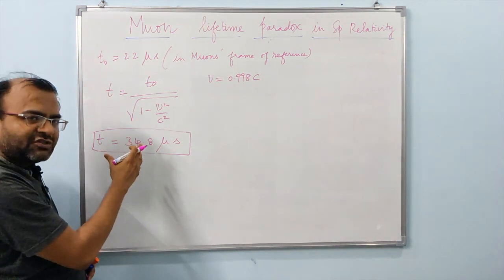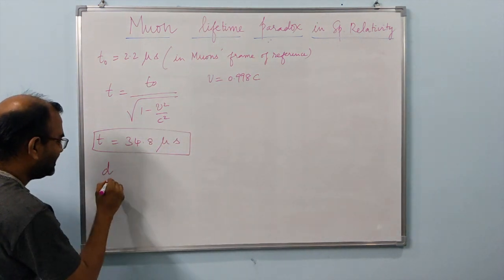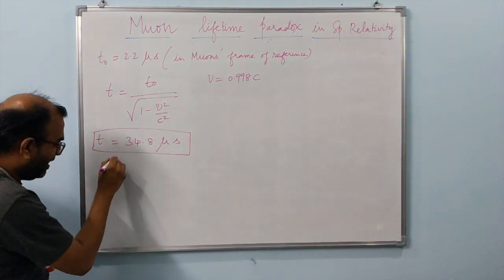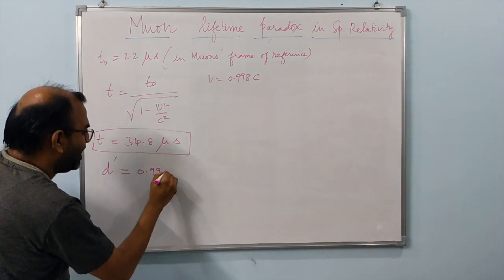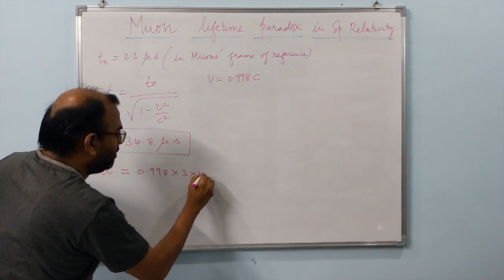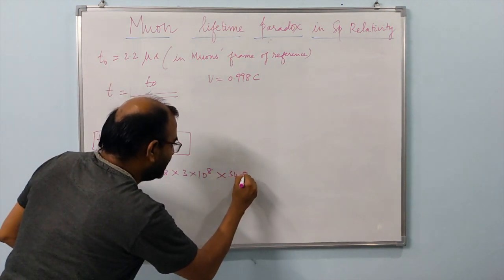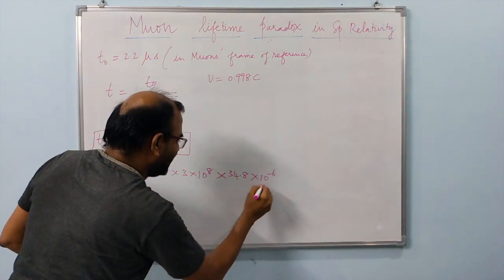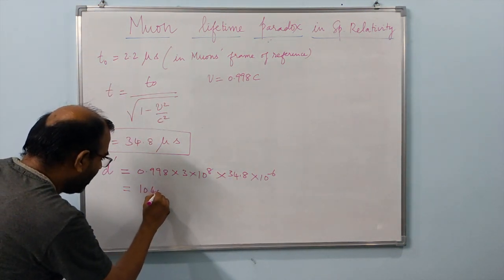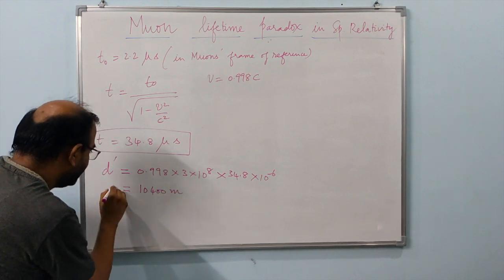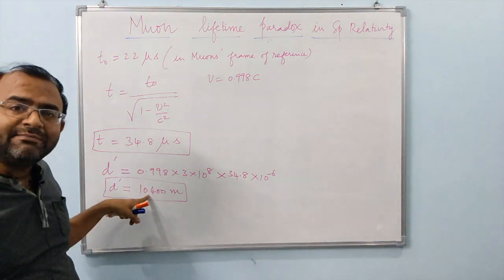With this dilated time available in Earth's frame, the distance the muon would be able to travel is d = v × t = 0.998 × (3 × 10⁸) × (34.8 × 10⁻⁶ seconds). Working out the numbers gives roughly 10,400 meters — so the muons would easily be able to travel about 10.4 kilometers.